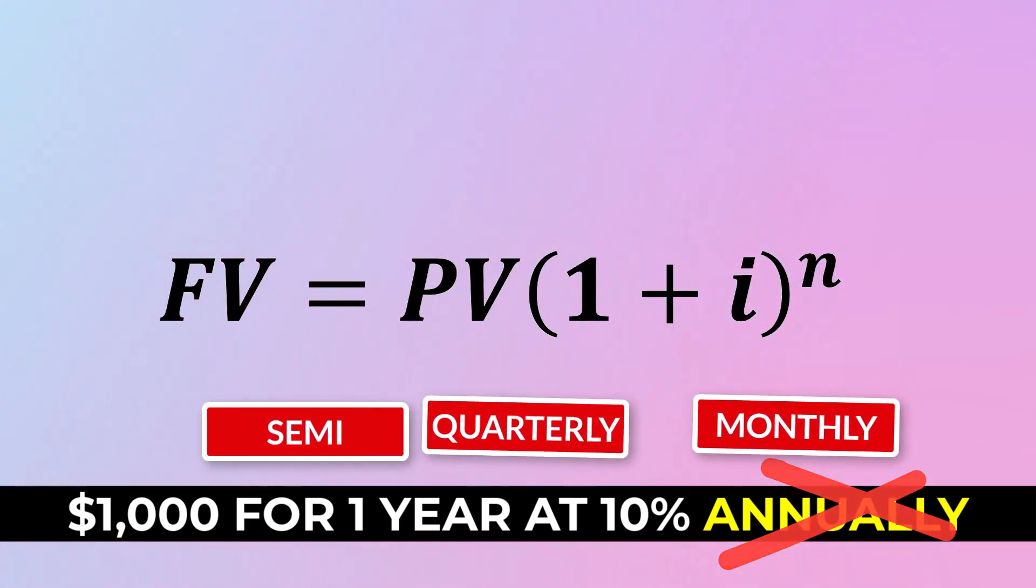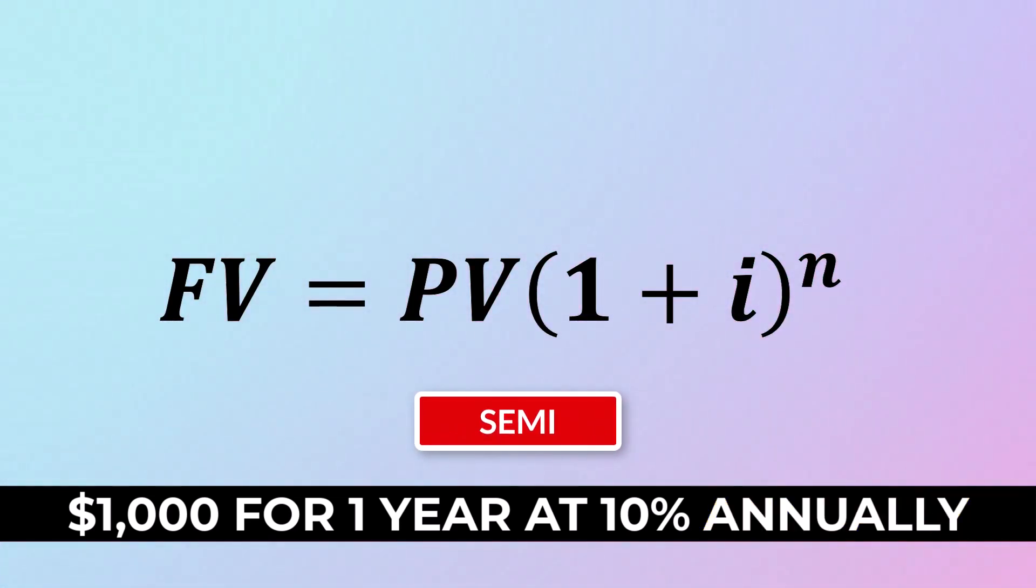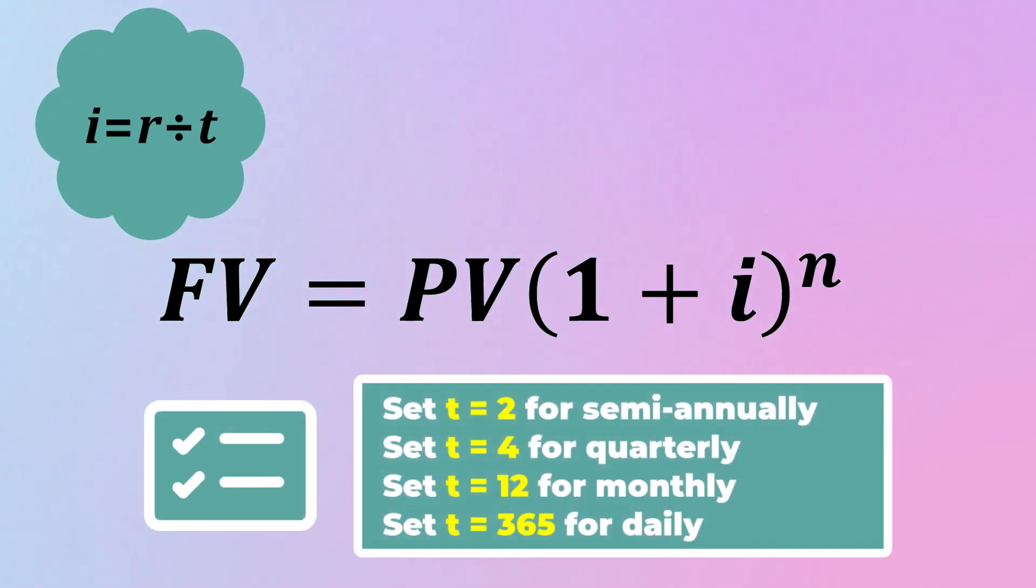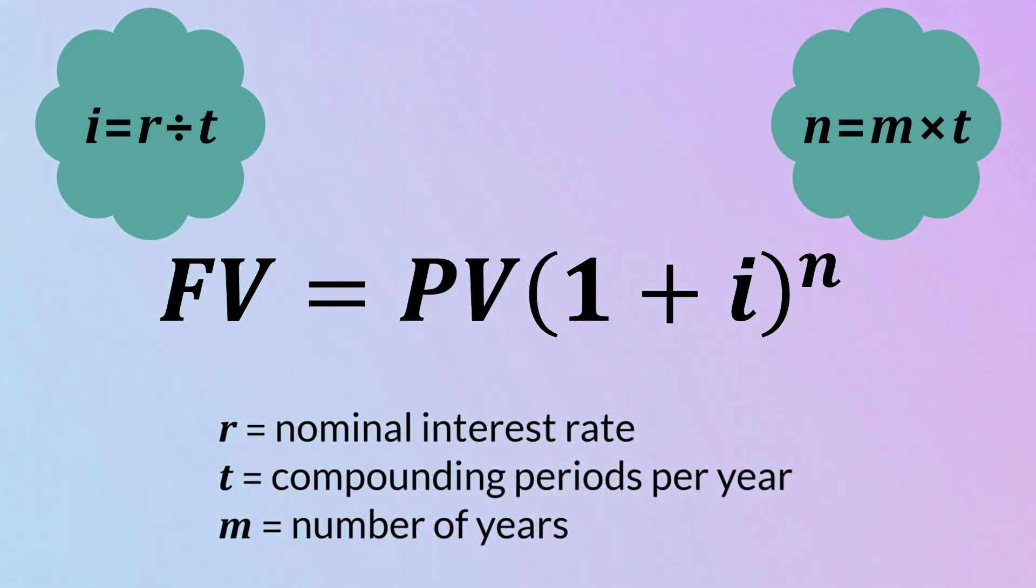For example, if the interest is compounded semi-annually, it means that the present value is being compounded twice a year. In situations like these, our value of I is found by dividing the given interest rate, which we call R, by the number of compounding periods in a year, which we call T. Our value of N is found by taking T and multiplying it to the number of years we plan to keep our money into the account, and this becomes our N value. This ensures that the interest rate is properly adjusted to account for the increased compounding frequency.